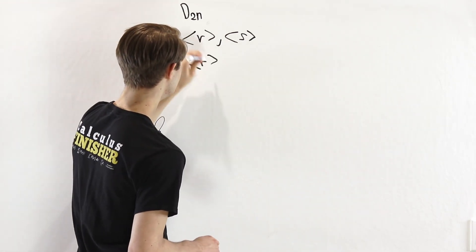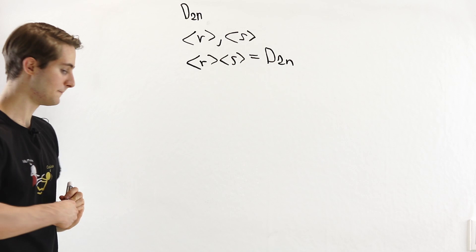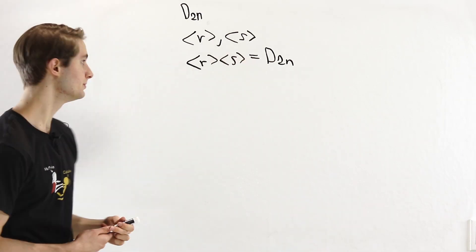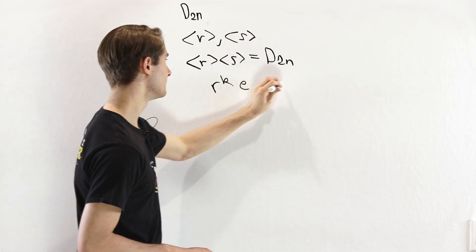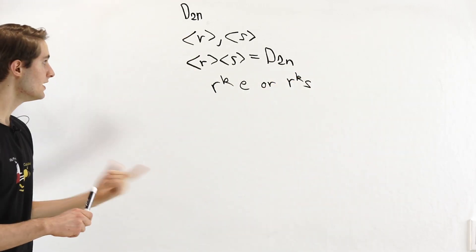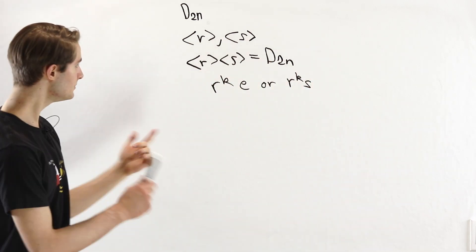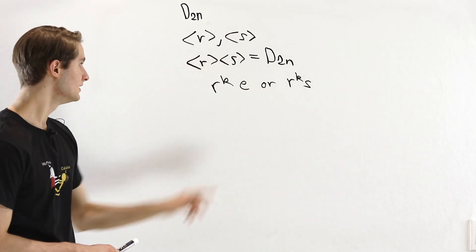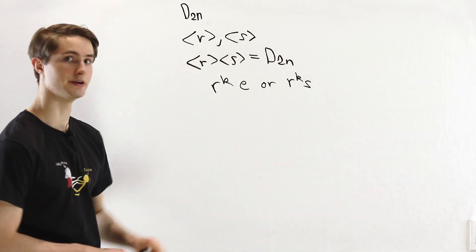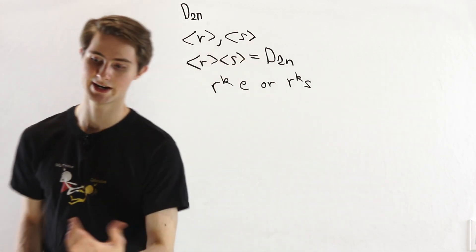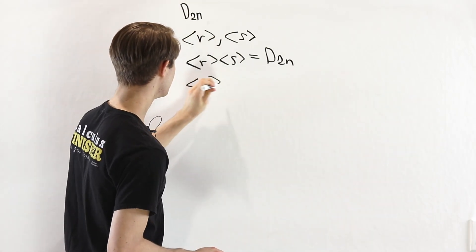First, we need to show that the subgroup generated by R times the subgroup generated by S gives us the entire group D₂ₙ. Every element in the dihedral group can be written as R to the K, or R to the K times S — so every element is some rotation and then possibly a reflection. Because of this, R to the K is in the first subgroup and E and S are both in the second subgroup, so every element can be written as a product of one from each, and therefore this product gives us the entire group.